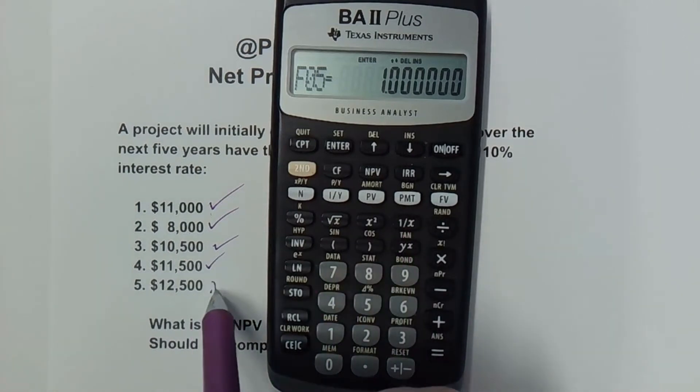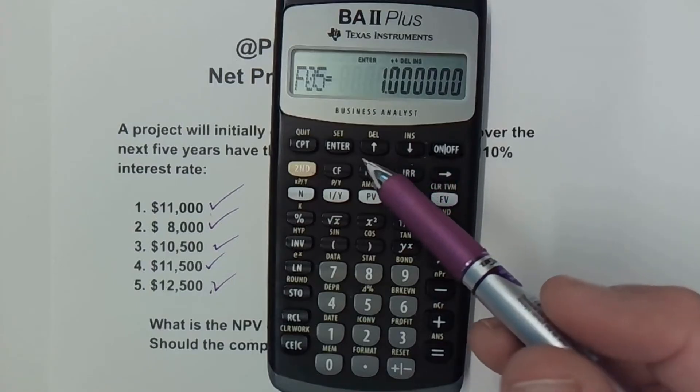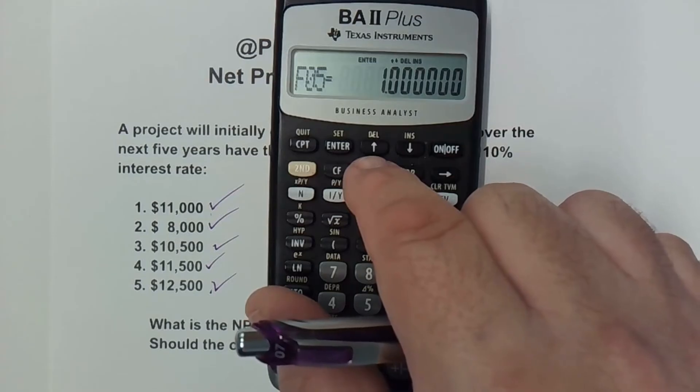Now we've entered all the cash flows, but we want to calculate the net present value. So I can hit NPV.